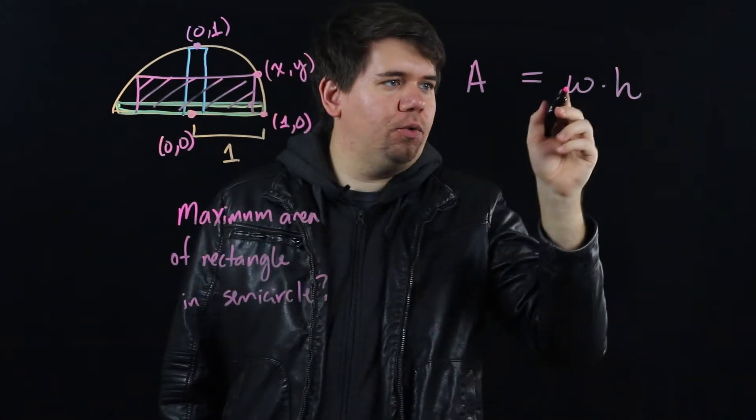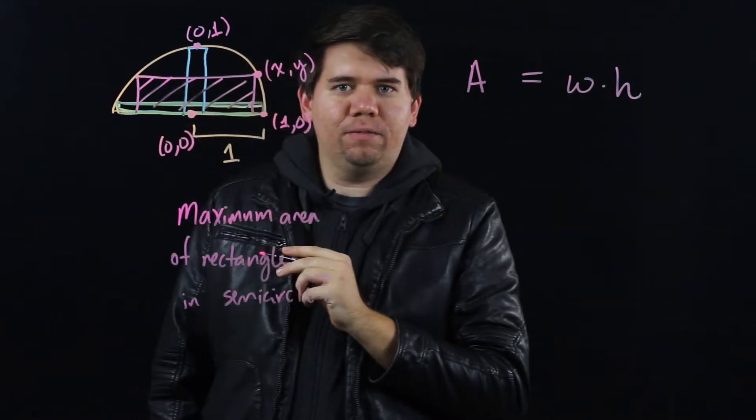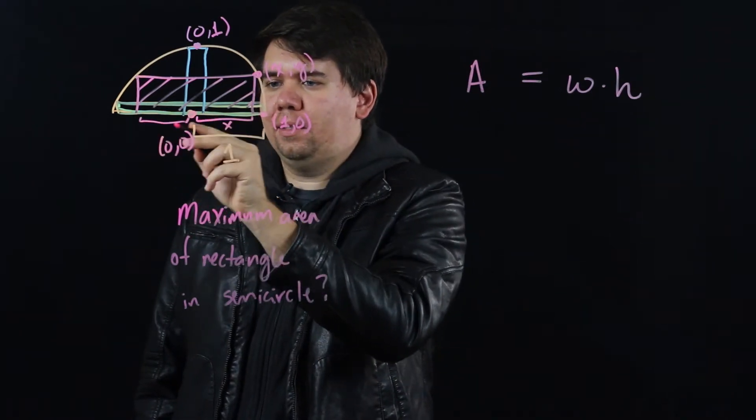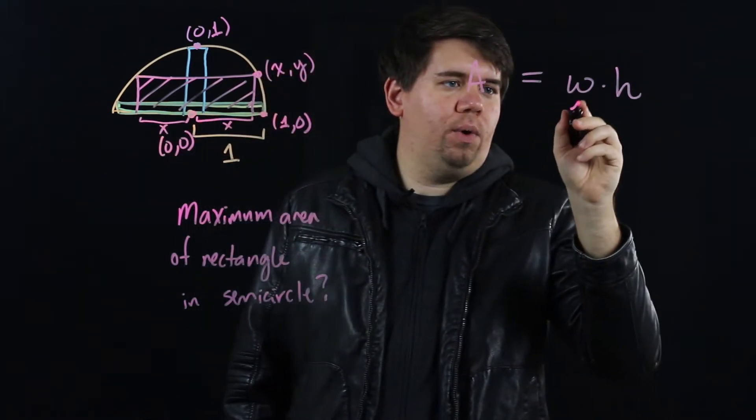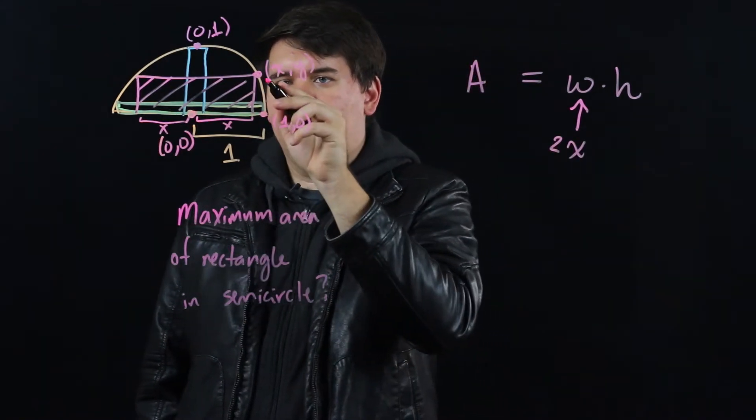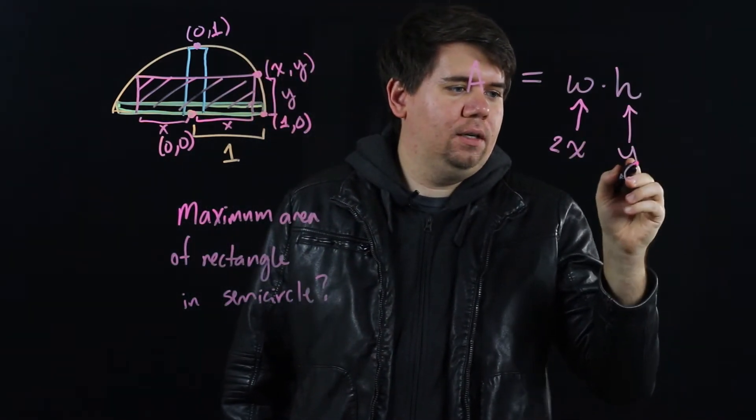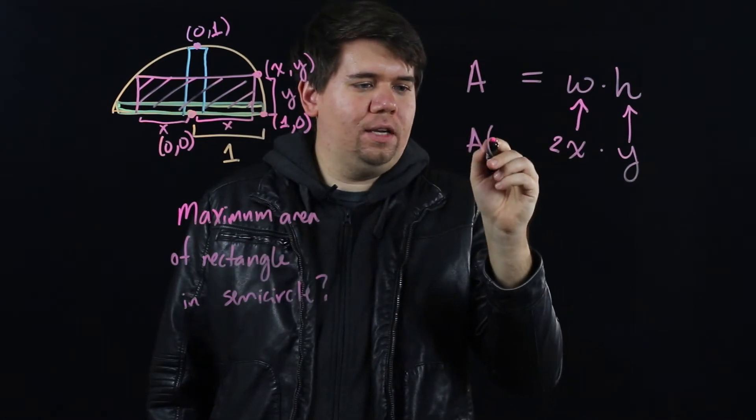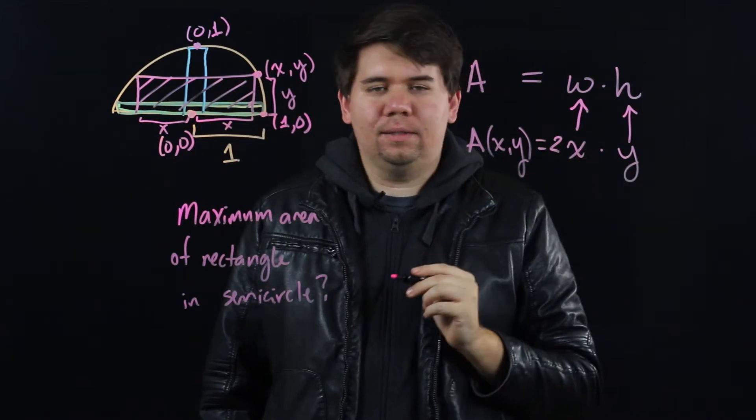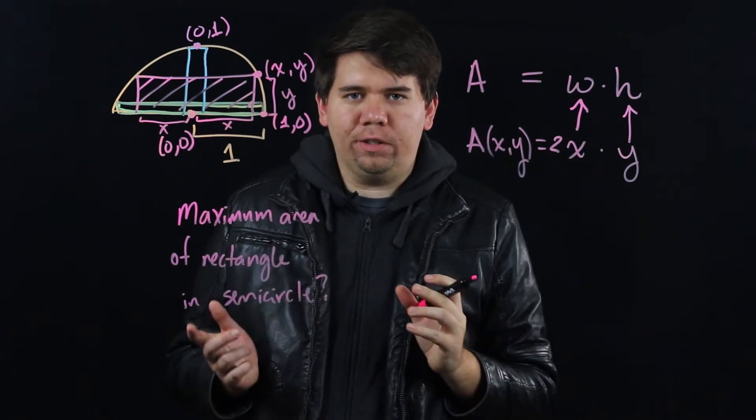And then you can see that your width of your rectangle will just be 2 times whatever that x value is. You have that same distance on the other side, so your width is just 2x. And your height is just whatever your y value is. So your area you can think of as a function of x and y: A(x,y) = 2xy. How are we going to find when it's largest?